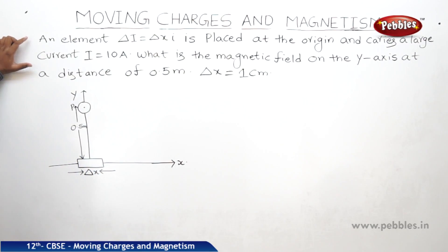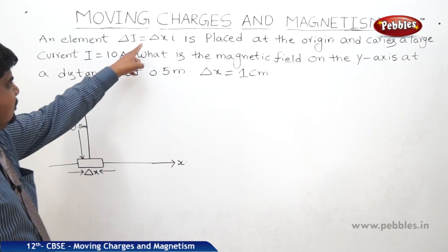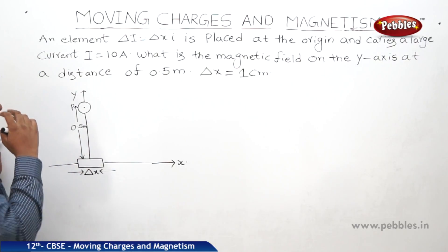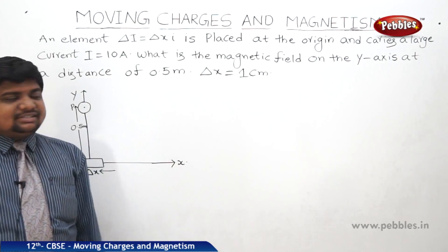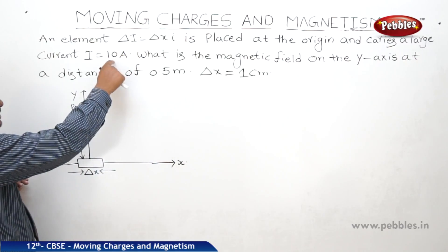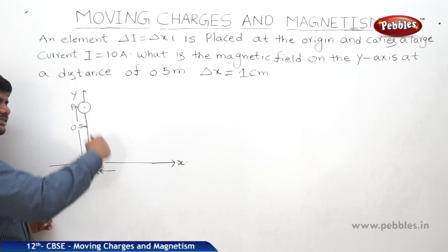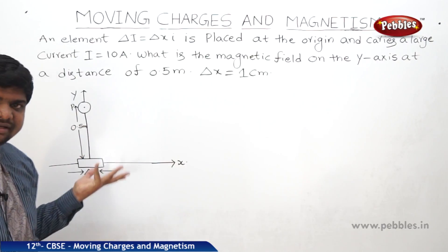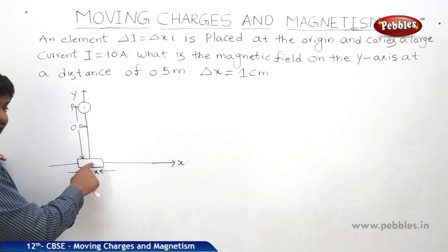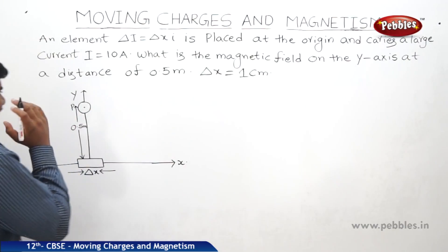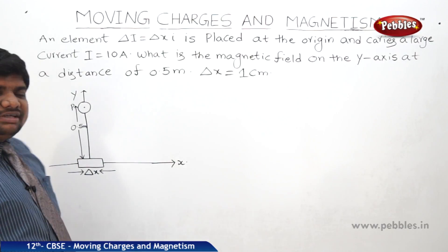Here is one problem related to the Biot-Savart law. The content of the problem is: there is an element carrying a current delta I, equal to delta x times i along the x-axis, placed at the origin, and carries a large current i equal to 10 amperes. What is the magnetic field on the y-axis at a distance of 0.5 meters, where delta x equals 1 centimeter? The element carries the current of delta x times i, where i equals 10 amperes. When the current is like this, the field always lies perpendicular. So we need not apply the theta angle because it is asking in the direction of the perpendicular.